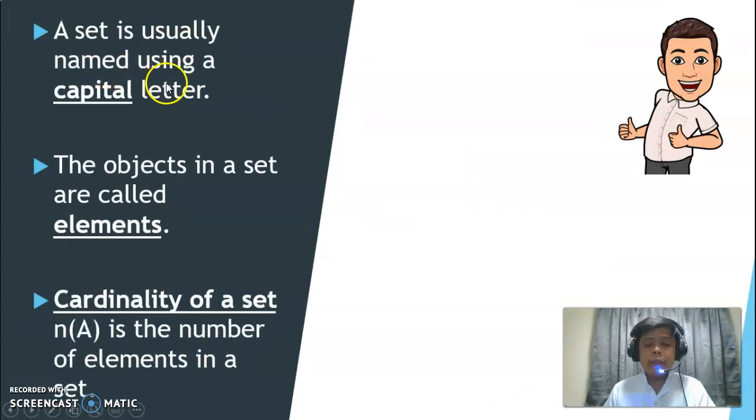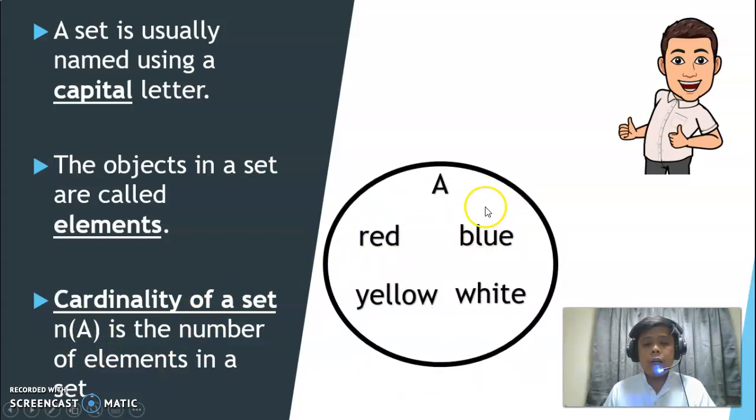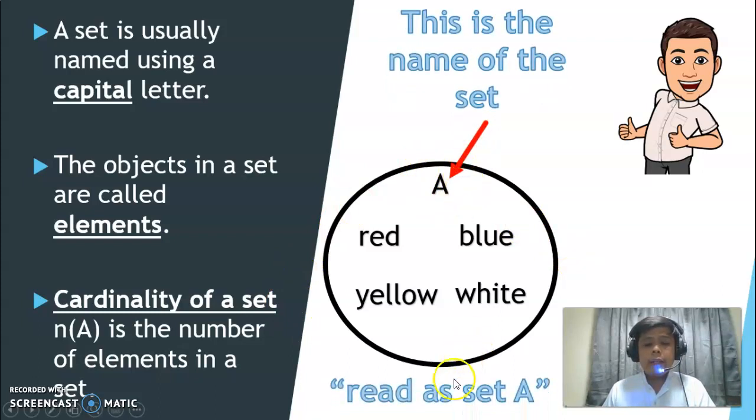A set is usually named using a capital letter. The objects in a set are called elements. And then the cardinality of a set is the number of elements in a set. When we talk about cardinality, you'll see this: small letter N, open and close parentheses, then the name of the set. Let's have an example. So the capital letter at the top tells us the name of the set. We can read this one as set A. And then when we talk about cardinality, N of set A, how many elements are there? 1, 2, 3, and 4. So it's 4. Cardinality is simply the number of elements in a set.